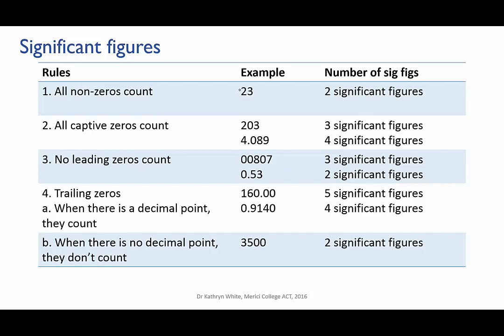First rule, all non-zero digits are significant. In the number 23, you have two non-zero digits, 2 and 3. Clearly both of those digits have been measured. So this number has two significant figures.